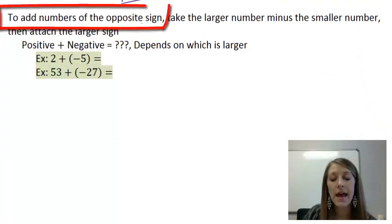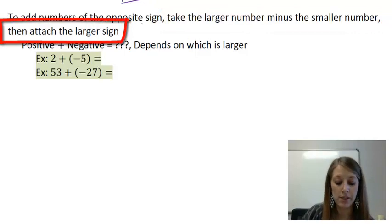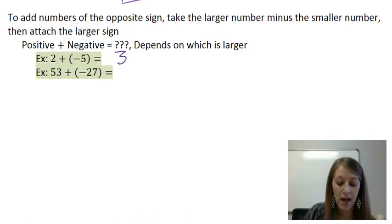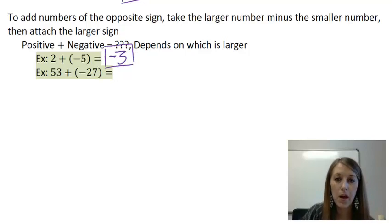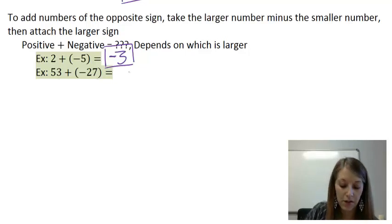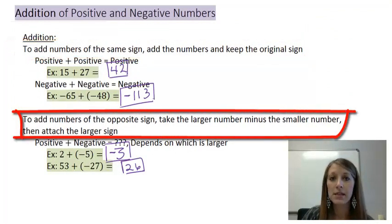When the numbers have opposite signs, it depends upon which one is larger. We take the larger number minus the smaller number, and then attach the sign of the larger number. For example: 2 plus negative 5. The larger number is 5, so 5 minus 2 gives me 3. The larger number is negative, so my final answer is negative 3. Second example: 53 plus negative 27. Opposite signs — the larger is 53, subtract 27, giving a difference of 26. The larger number is positive, so my final answer is positive 26. To recap: same sign — add the numbers and attach the sign. Opposite signs — take the larger minus the smaller, and the final answer has the sign of the larger number.